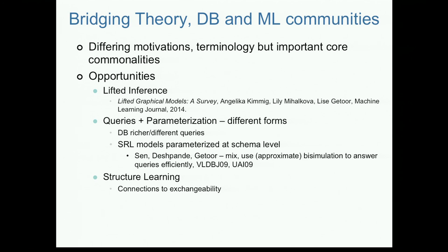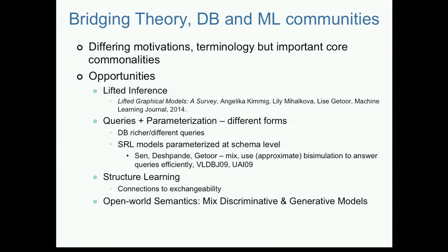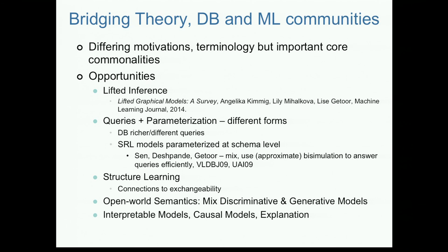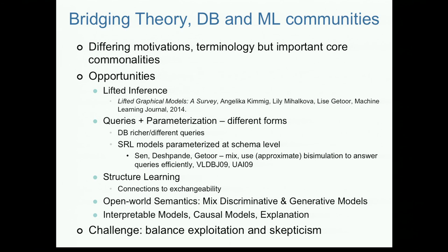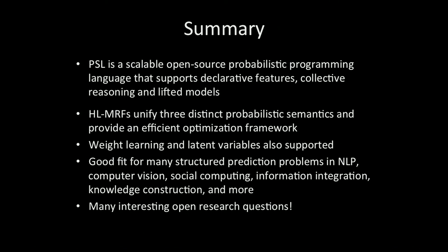Structure learning — learning the structure of these rules — is important, and I think it connects to exchangeability. Open world semantics that Stuart mentioned is also relevant. The models I talked about today were mainly discriminative, not generative, and there's an interesting opportunity to mix these. And none of this talks about causality, interpretability, or explainability — all of these are hugely important for having confidence in what's coming out. That goes back to what I mentioned at the very beginning: being intelligent about exploiting the structure in the data, but also having some skepticism about what's coming out of these predictive models.